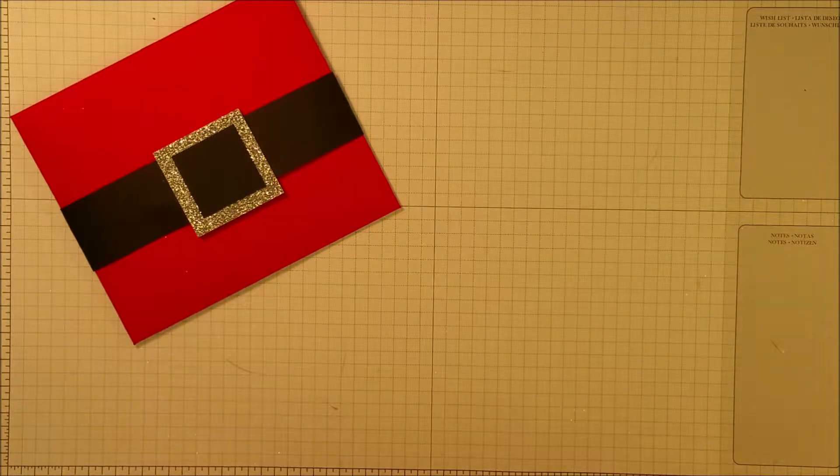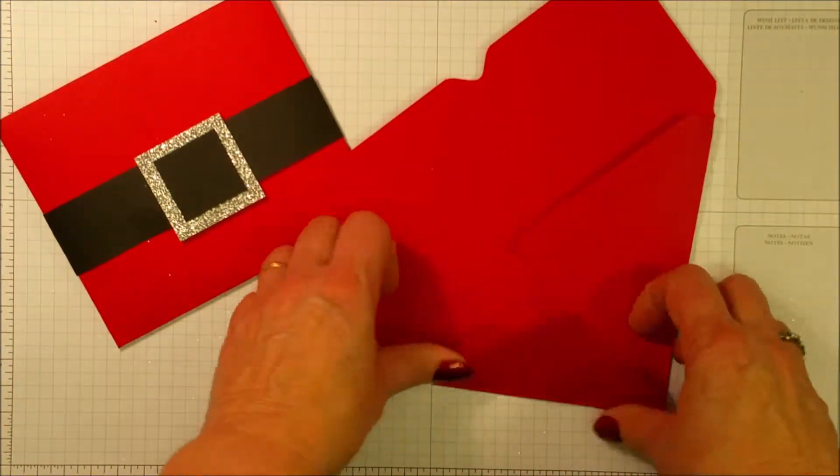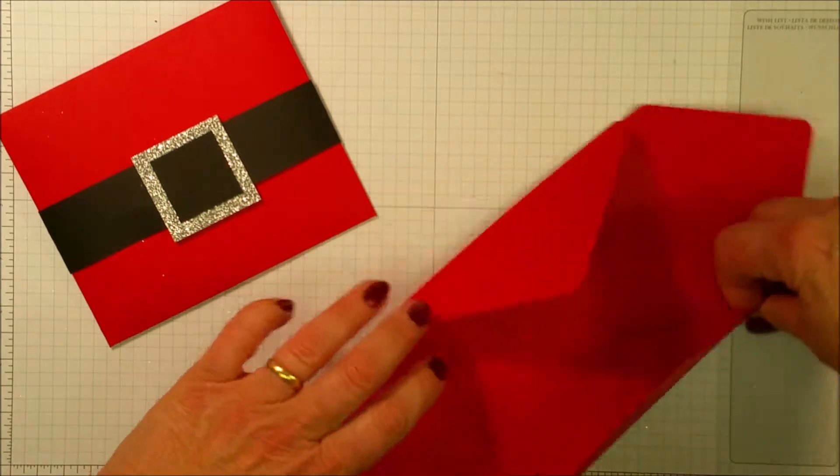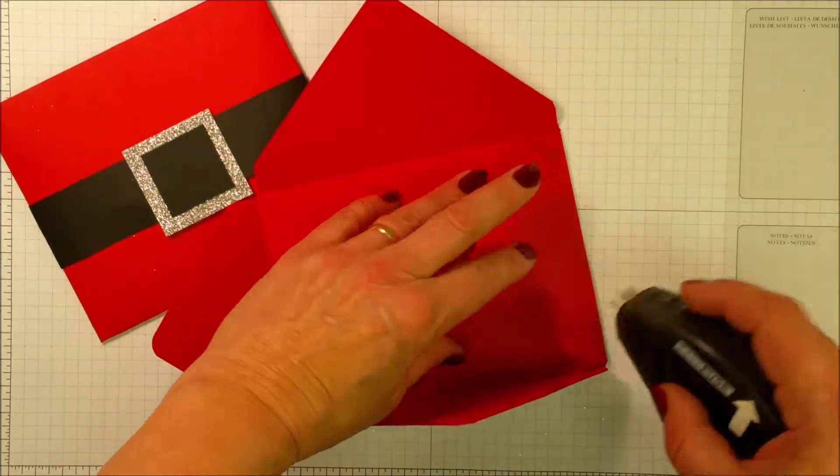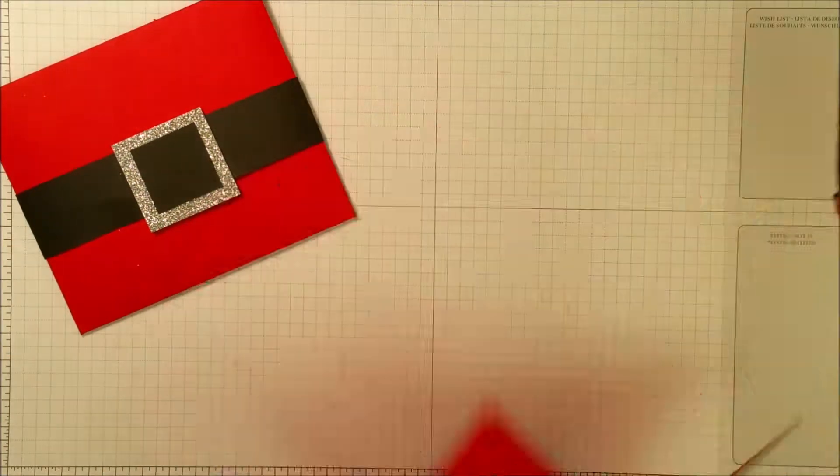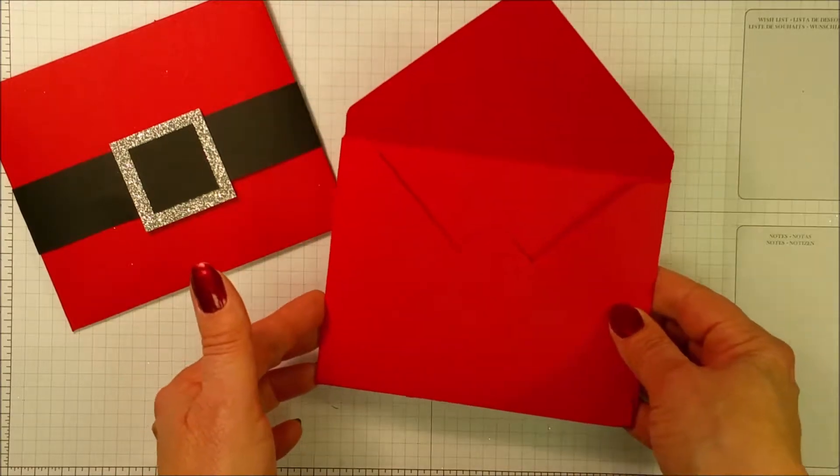Alright, to finish off this project, it's really easy. The first thing you have to do is score on the fold lines and glue it together. I like my Fast Fuse for this. The envelope is done.